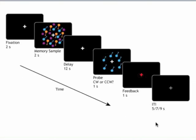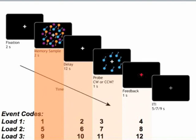To isolate activity associated with perceiving the moving dots, with the delay, with the memory probe, and with feedback, the analysis assigns event codes: for load-one trials, one for the sample, two for the delay, three for the probe, and four for the feedback period. Separate sets of codes are used for load-two and load-three trials.